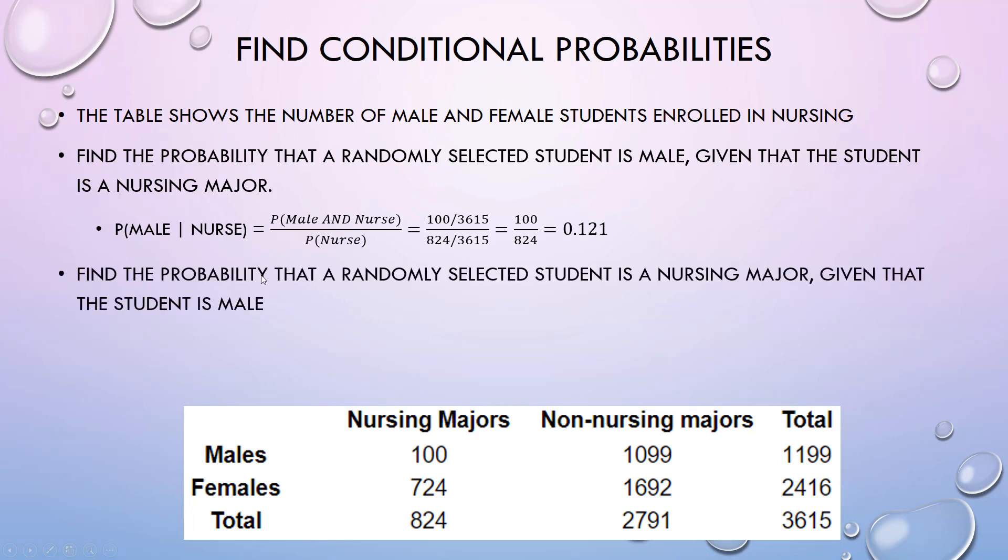What if we wanted to see what's the probability a randomly selected student is a nursing major given that they're male? Do we get the same thing? Nursing given male - well that probability is the same, but now we're going to divide off the probability they were a male, so 1199 out of 3615, to get our probability.